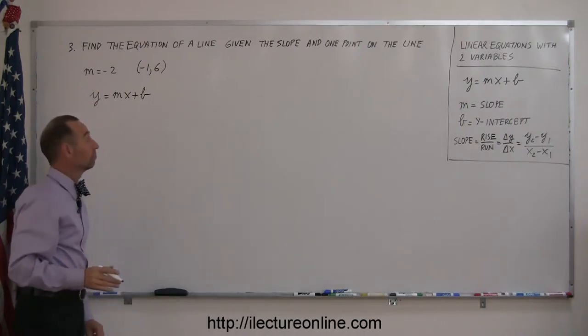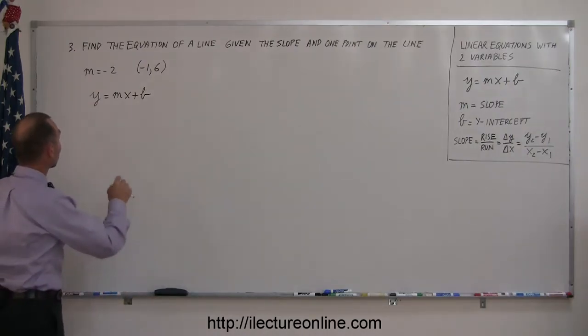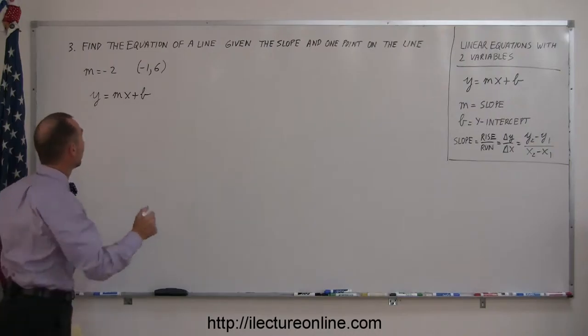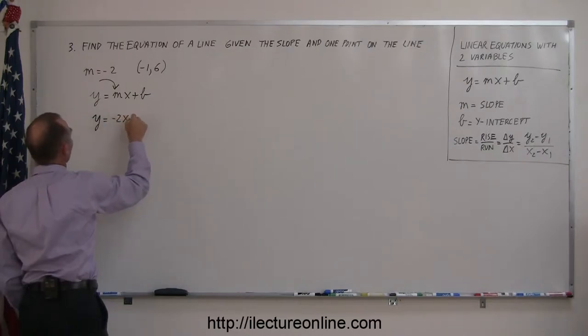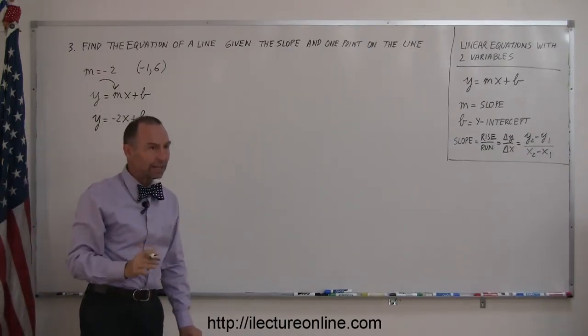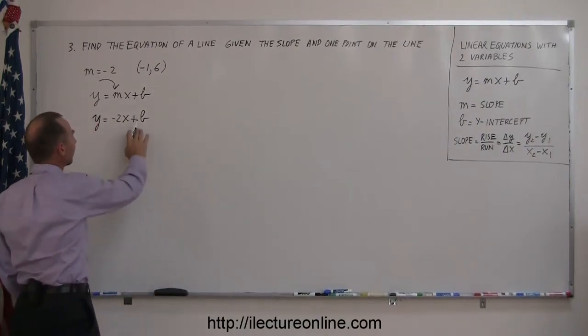Now, you recognize, here's m equals negative 2. They already gave me the slope, which means I can plug that number right in here and I can write y equals negative 2x plus b. So the only other thing I need to figure out is what b is equal to.